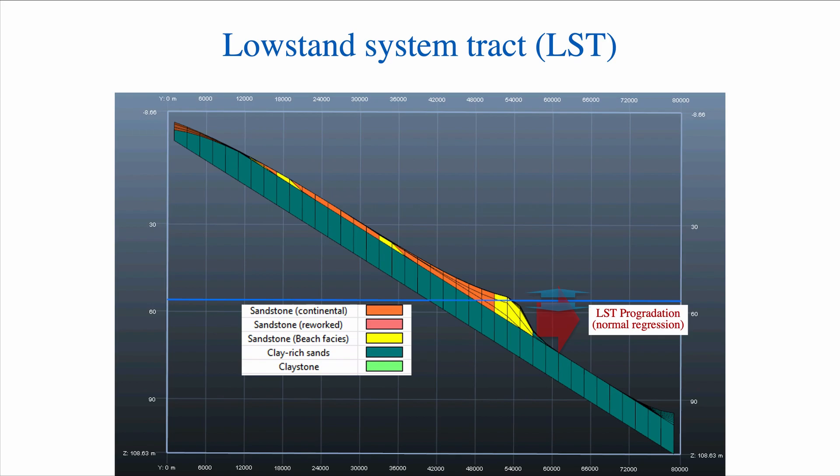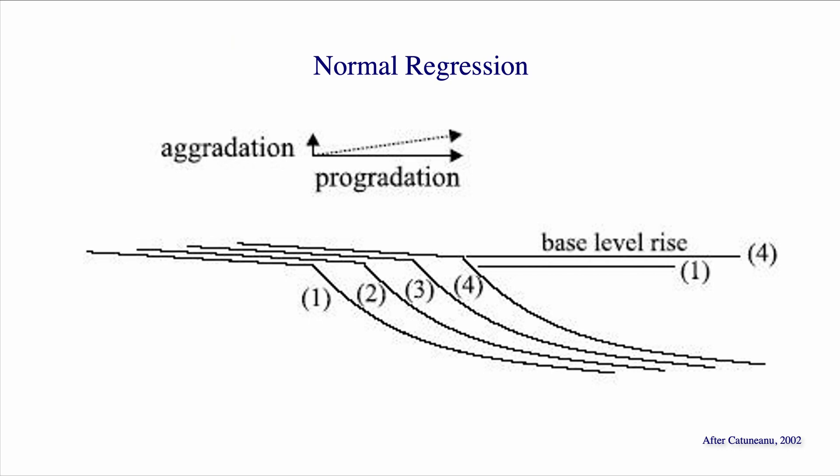What is a normal regression? A normal regression is when you don't have a base level fall. In fact, you might have a slow base level rise or a base level stillstand. But because the amount of sediment that you bring to the system exceeds the creation of accommodation, you have progradation of the system from 0.1 to 0.2 to 0.3 to 0.4.